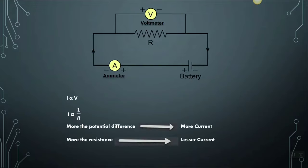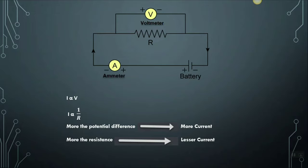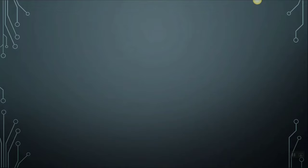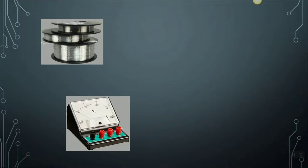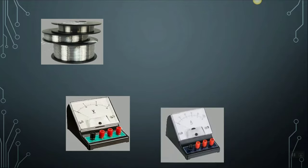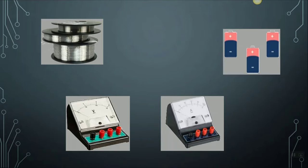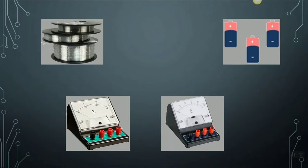Ohm's law in simple words gives us the relationship between the current, the voltage, and the resistance in the circuit. Now let's understand a quick activity to understand Ohm's law. We would need a nichrome wire, a voltmeter, an ammeter, and three electric cells of very low voltages somewhere in the range between 1 to 1.5 volts.